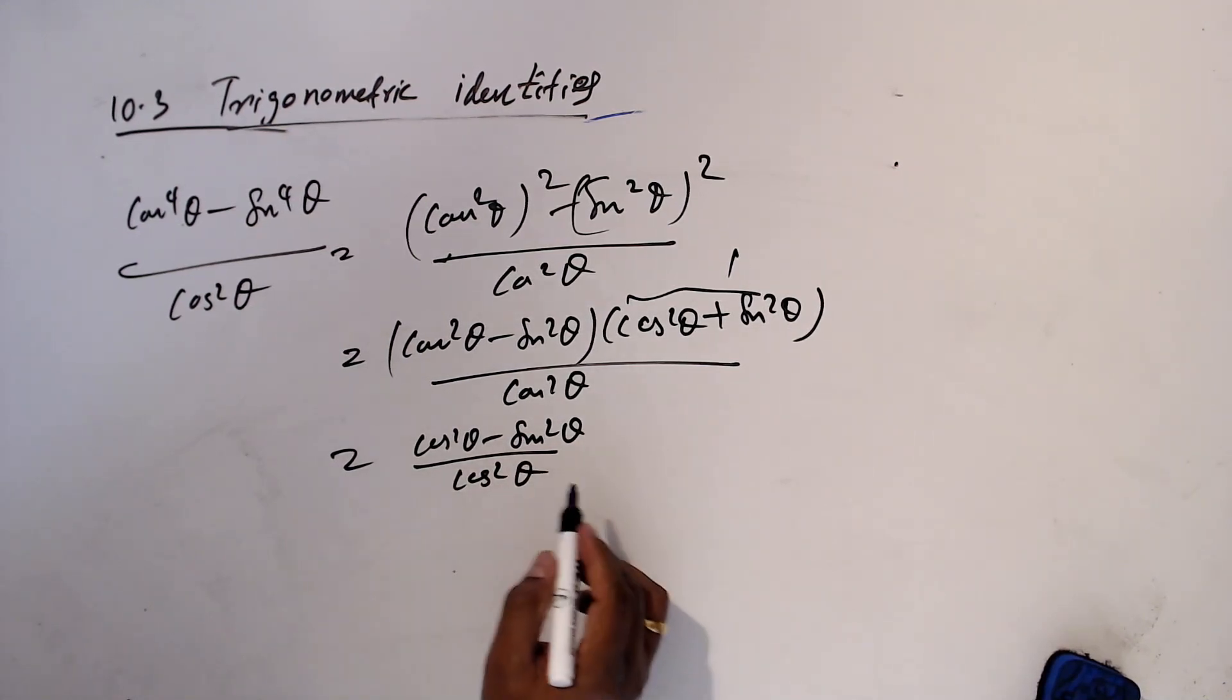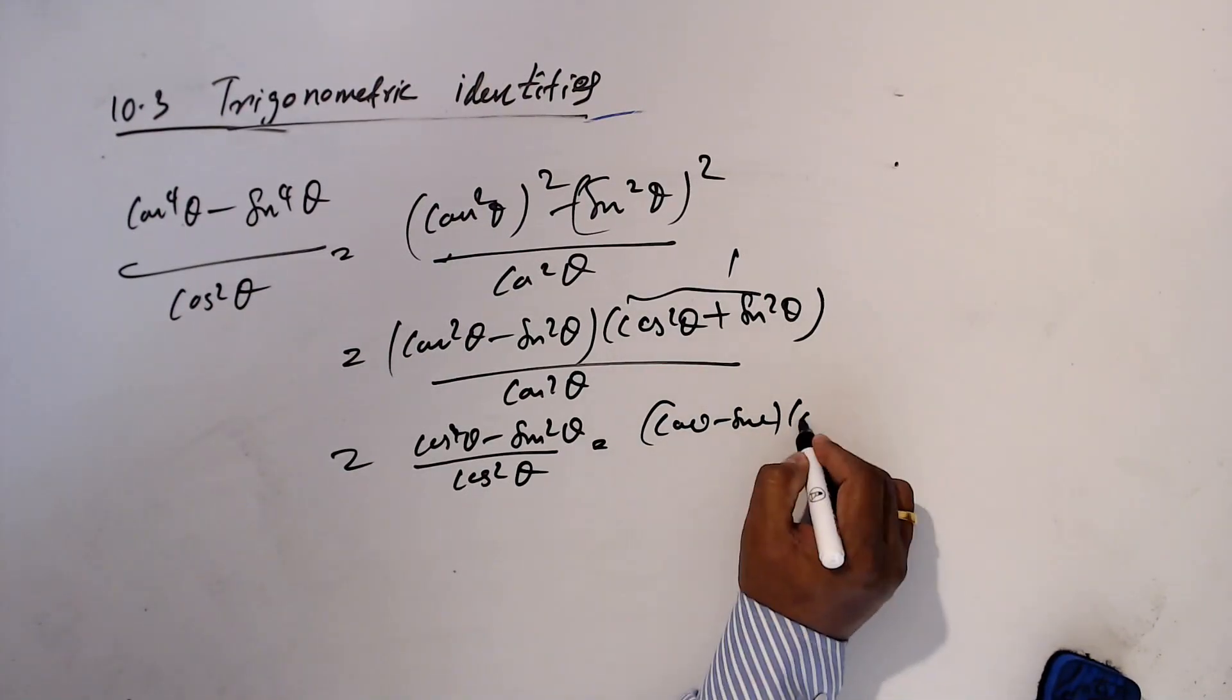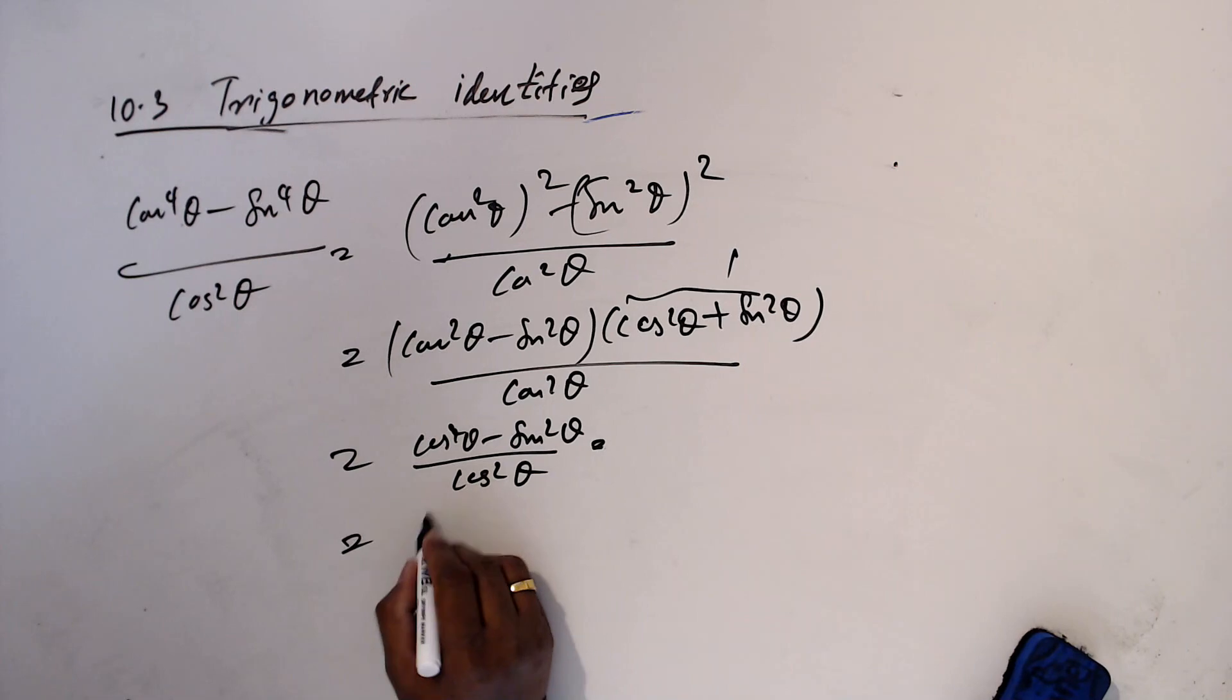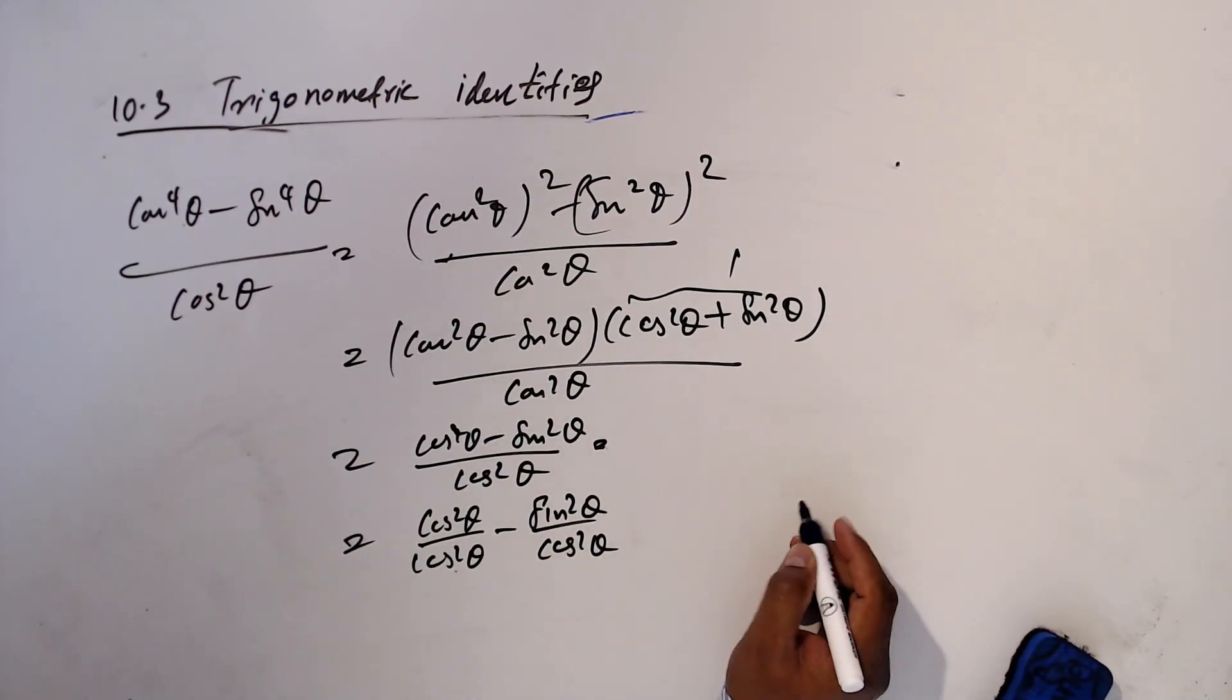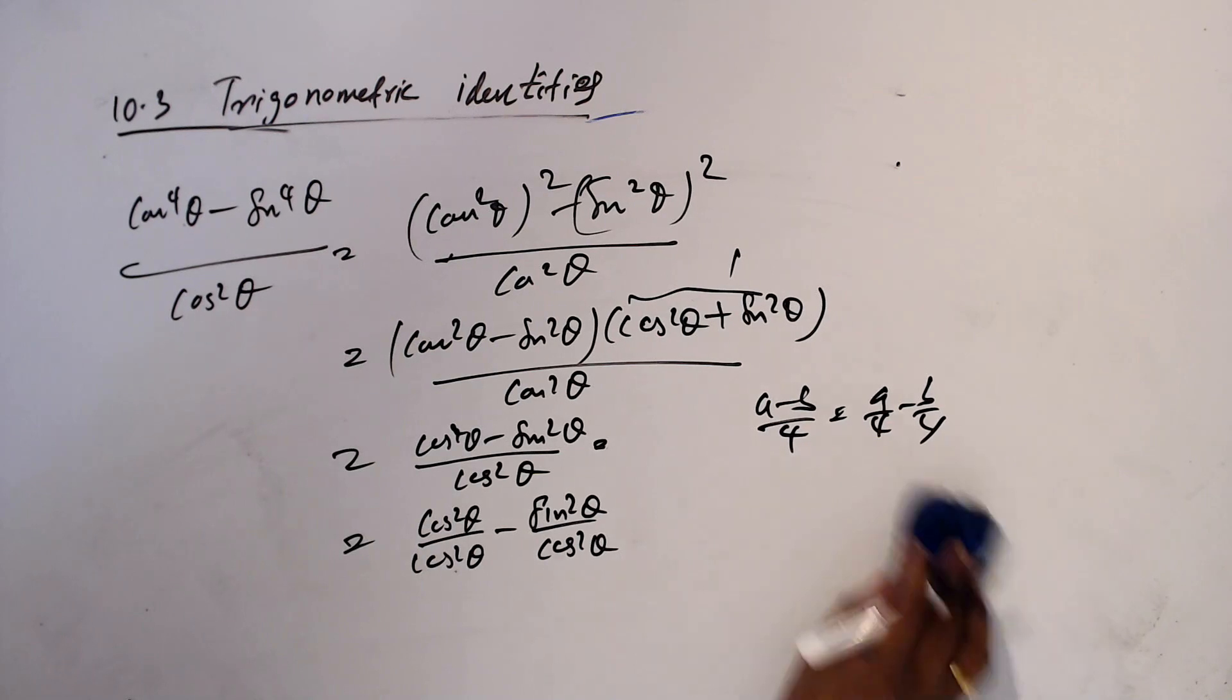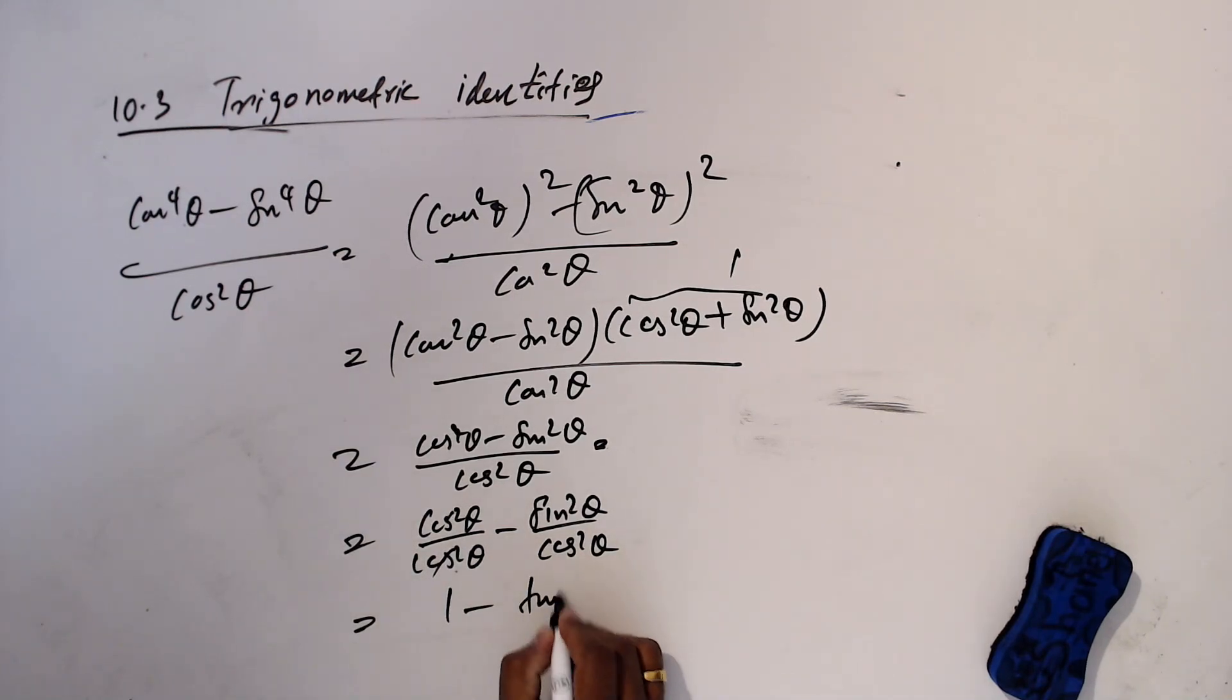Actually in the previous video I went to cos theta minus sine theta, cos theta plus sine theta, but I think we'll do this. This is going to be cos square theta over cos square theta minus sine square theta over cos square theta. What I did here, A minus B over C is A over C minus B over C. I expand this. This is going to be one minus cos square theta cancel out, one minus tan square theta.